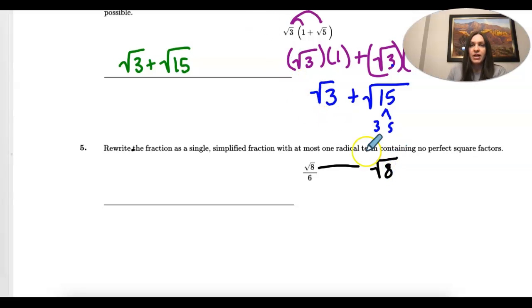So to do that we look for factors. We know that 8 is 2 times 4 and 4 is 2 times 2. So 8 is really 2 times 2 times 2.